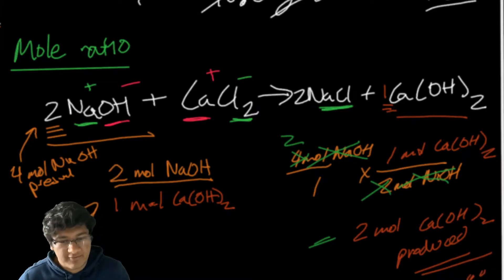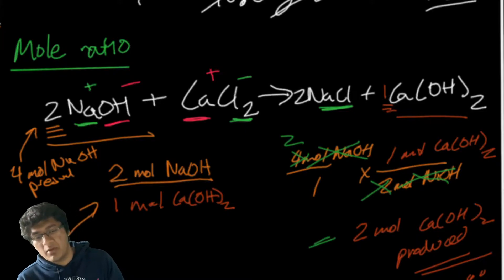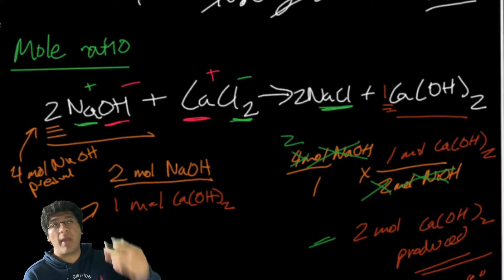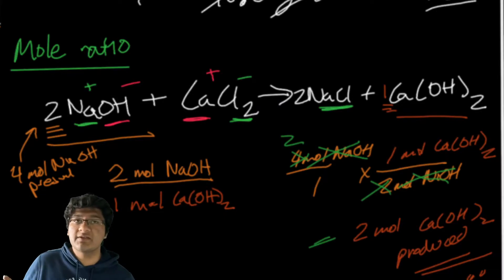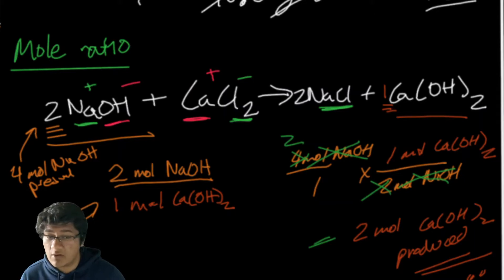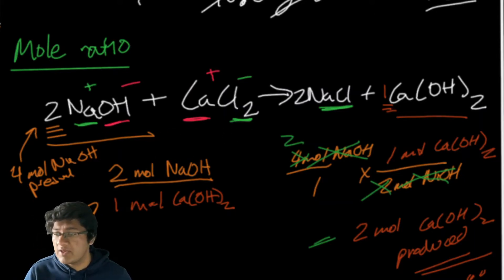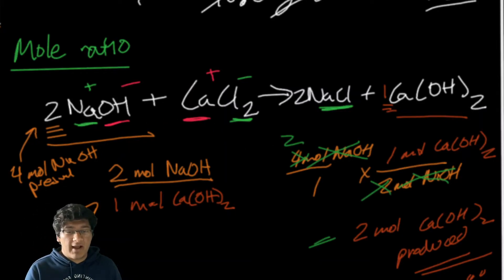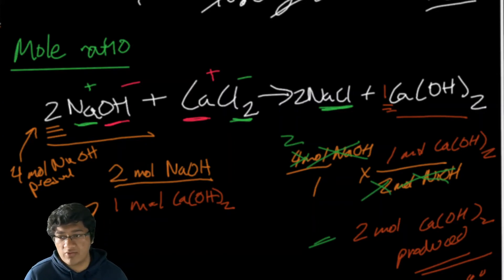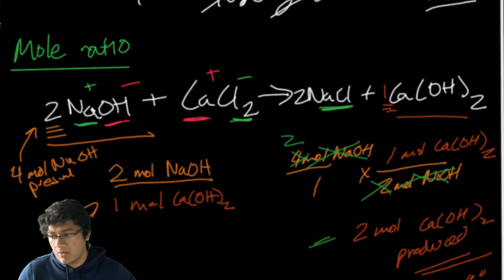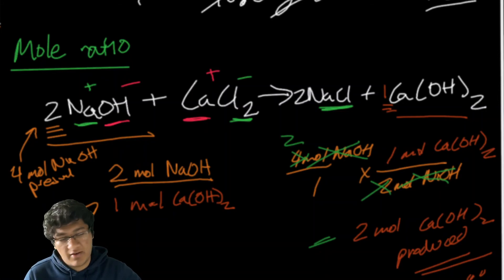That is stoichiometry. More advanced problems might give you a mass instead of moles — for example, 13 grams of NaOH — so you'd first convert to moles, then apply the mole ratio. You might also be asked about reactant-to-reactant ratios, like how much CaCl₂ is needed for a given amount of NaOH to go to completion. That's all for stoichiometry — if you have any questions, feel free to ask. See you next time.